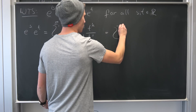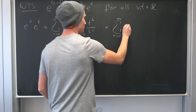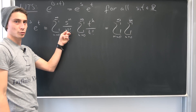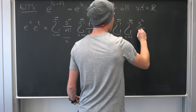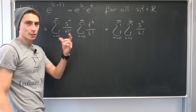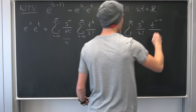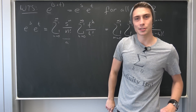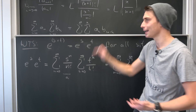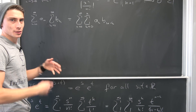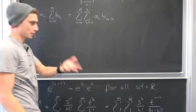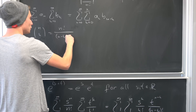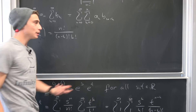So what does the Cauchy product give us here? We end up with the sum from n equals 0 to infinity, times the inner sum from k equals 0 to n — now with respect to k — of s to the kth power over k factorial, times t to the n minus kth power over n minus k factorial.